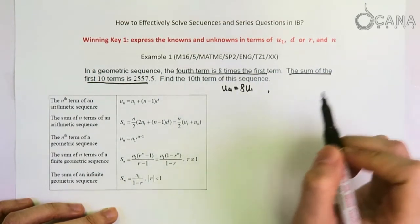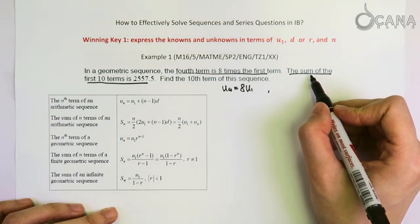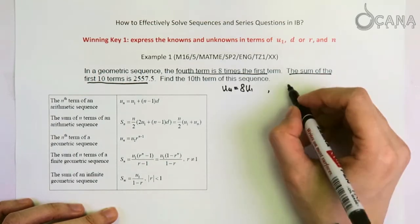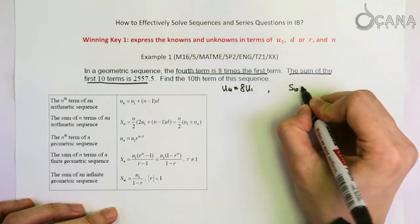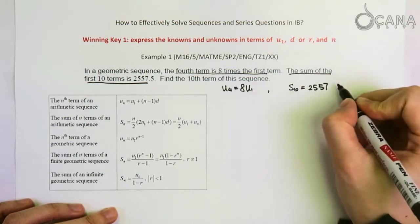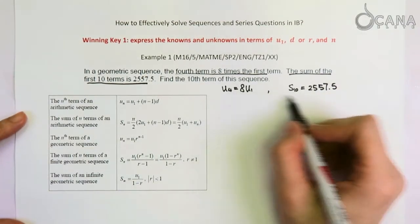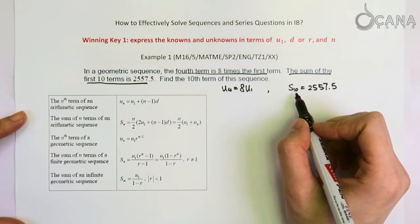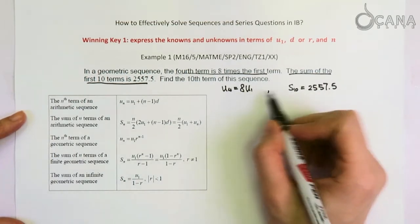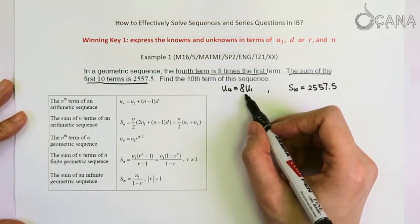That is the first piece of information. The second piece of information is the sum of the first ten terms, which is denoted by S10 equals to 2,557.5. Now we have two equations to work on. For each of these equations, we are going to rewrite them.